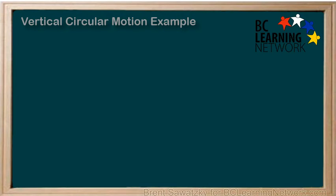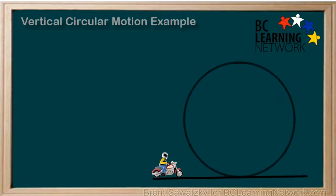Let's consider a vertical circular motion problem. In our problem, a motorcycle goes into a loop-de-loop and coasts through the loop as shown. That is, the rider does not propel themselves at all during the stunt.